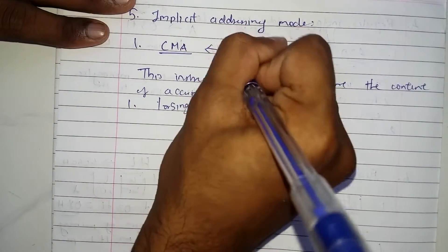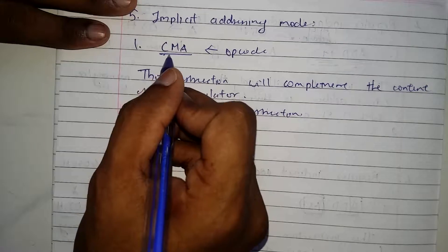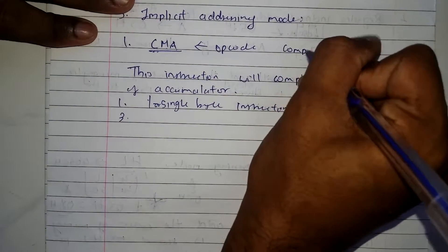We only have the opcode here. Now as you can see it is called CMA, so I'll write what this means.